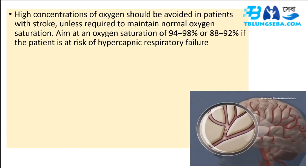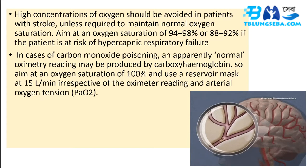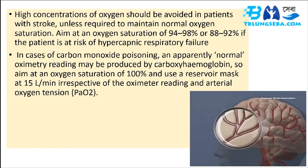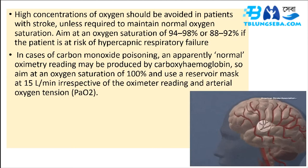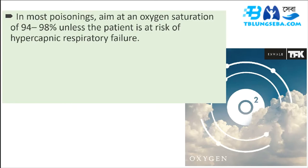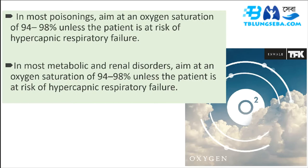In carbon monoxide poisoning, an apparently normal oximetry reading may be produced by carboxyhemoglobin, so aim at an oxygen saturation of 100% using a reservoir mask at 15 L/min, irrespective of the oximeter reading and arterial oxygen tension. In most other poisonings, aim at 94 to 98% unless at risk of hypercapnic respiratory failure. In most metabolic and adrenal disorders, aim at 94 to 98% unless at risk of hypercapnic respiratory failure.